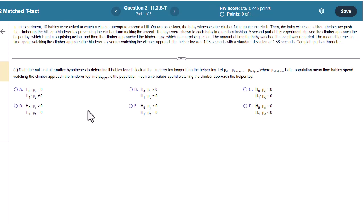Okay, so part A, let's go ahead and state H0 and HA, or H1 in this case, to determine if the babies tend to look at the hinderer toy longer than the helper toy. Now, this here is super important. They have to define, or we have to define, what the difference is. With textbook type problems, they usually do. When it's multiple choice, they have to. So, the difference is the hinderer, the mean hinderer, minus the mean helper.